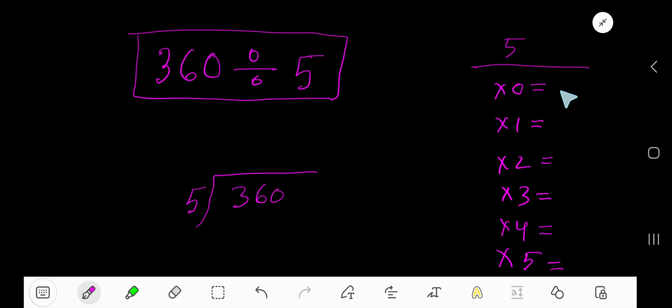5 times 0, 0. 5 times 1, just add 5 with the previous step. 0 plus 5, 5. 5 times 2, just add 5 with this previous step, you are getting 10.